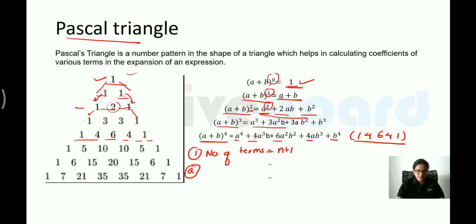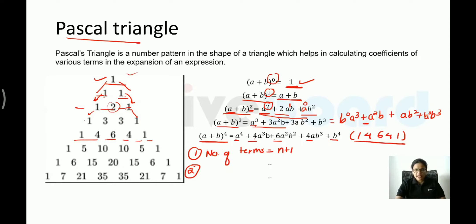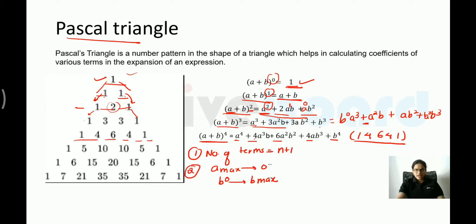Observe the powers of a and b across terms. In (a+b)^3: the first term has a^3·b^0, then a^2·b^1, then a^1·b^2, then a^0·b^3. So a's power decreases from n to 0 while b's power increases from 0 to n. The power of a is maximum at the start and decreases; b's power starts at 0 and becomes maximum at the end.